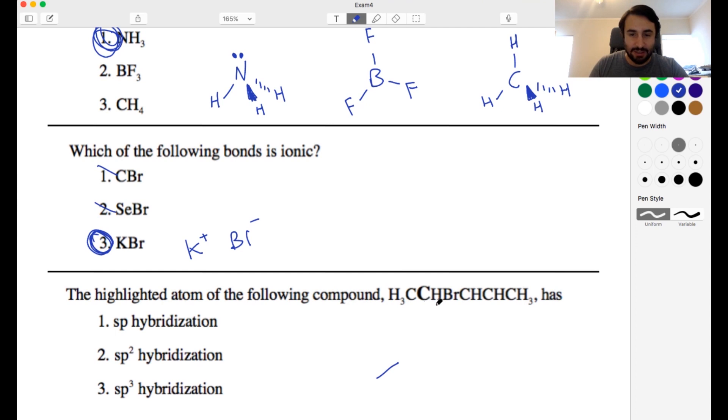So okay we've got CH3 connected to C. Now C is connected to H and Br and then another C. So we have H and then Br, so we'll do H, we'll do Br and then that's connected to the next C. So remember we have one, two, three like that. Now this C is connected to H and then another C. So if it's connected only to H and then another C then we're missing a bond so this must be a double bond. And then this C is connected to H and then CH3.